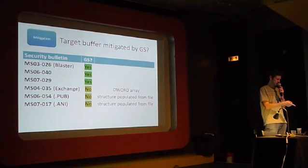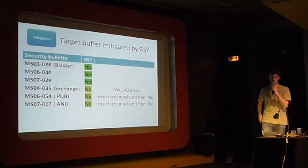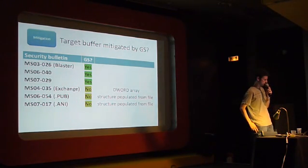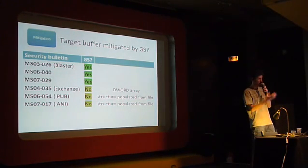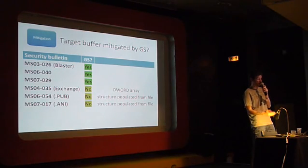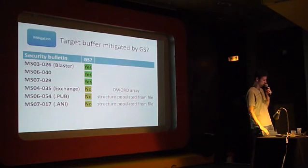In Office, in Publisher, and also in Windows for the ANI vulnerability, it was a structure that was populated from file data that the attacker could control.